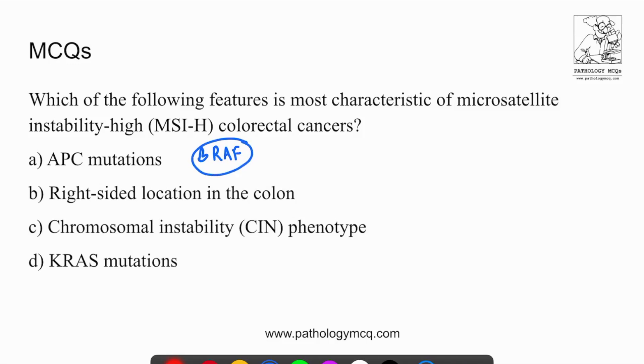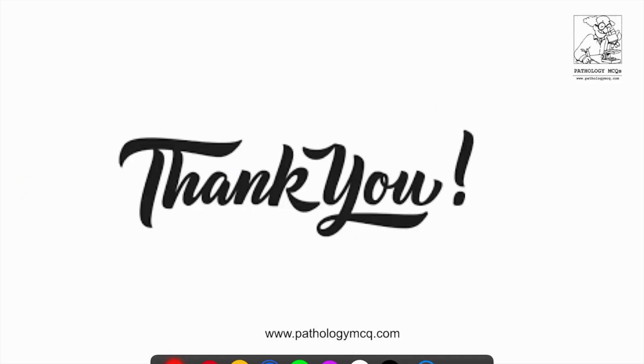Right sided location is correct. Left sided tumors are usually APC associated tumors. KRAS mutated tumors are also usually left sided tumors. So the answer is right side location of the tumor. So that's it. Thank you so much for listening.